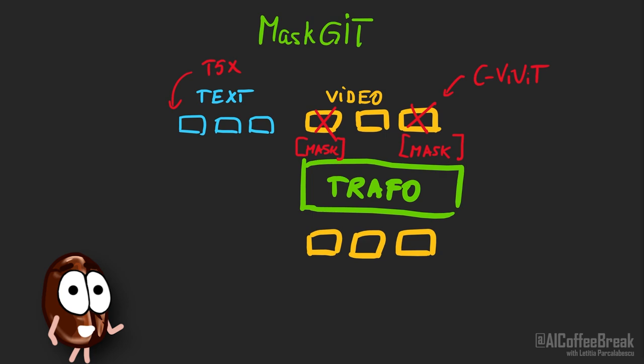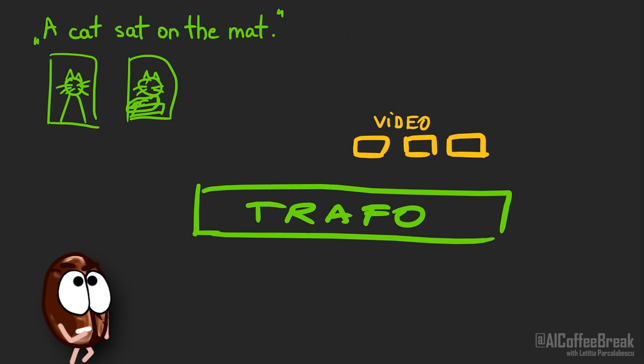This was how MaskGit produced short videos — the authors trained it on short videos paired with text descriptions, since there is not much data for longer form videos. But to produce long videos, the authors apply MaskGit iteratively, first taking in a sentence and letting MaskGit produce the video as described.